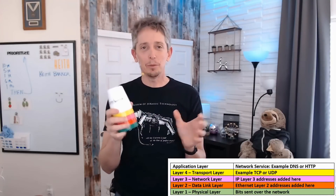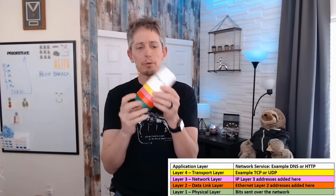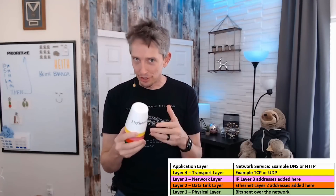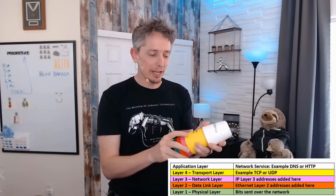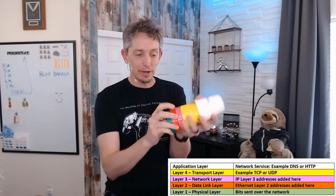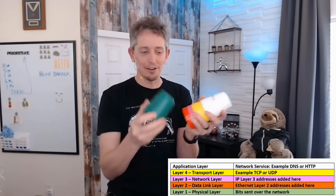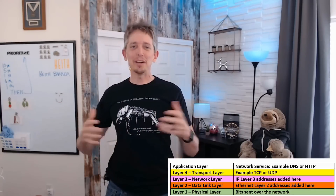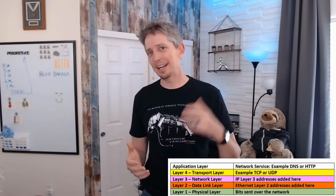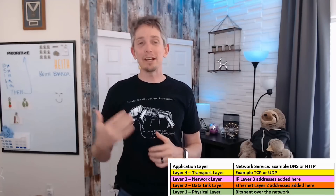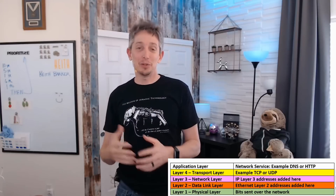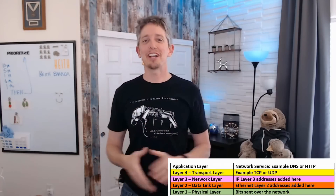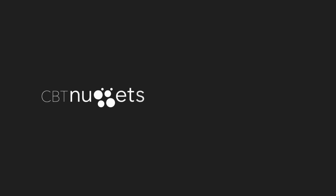So that's a fun way, using some cups, to represent the encapsulation that happens — all the way from getting an application layer service and adding the transport protocol, the network IP address, the layer 2 information, and then finally sending it out on the wire. In this nugget, I wanted to give you a slightly different way of looking at it — a story involving cups to help cement the concept of a protocol stack working together to allow traffic and messages to be delivered over a network. I hope this has been informative for you, and I'd like to thank you for viewing.